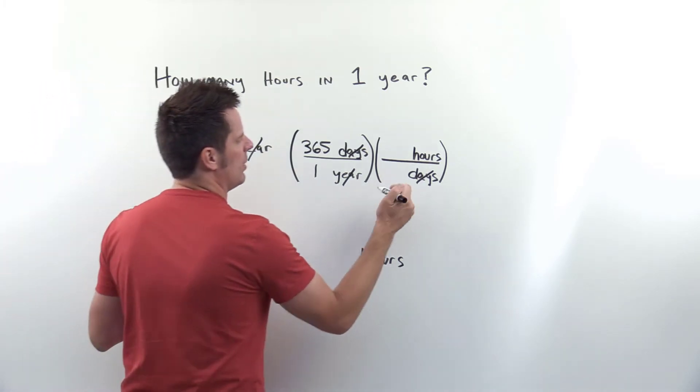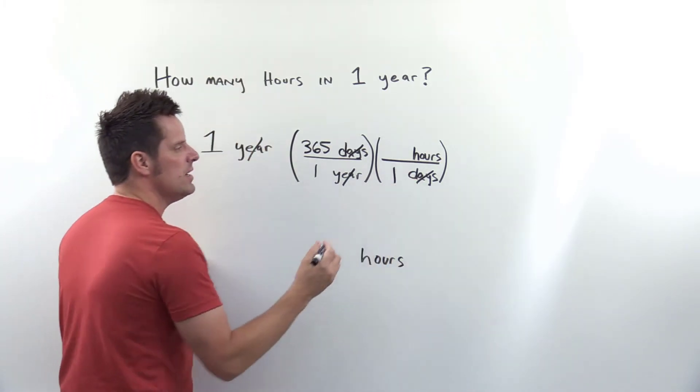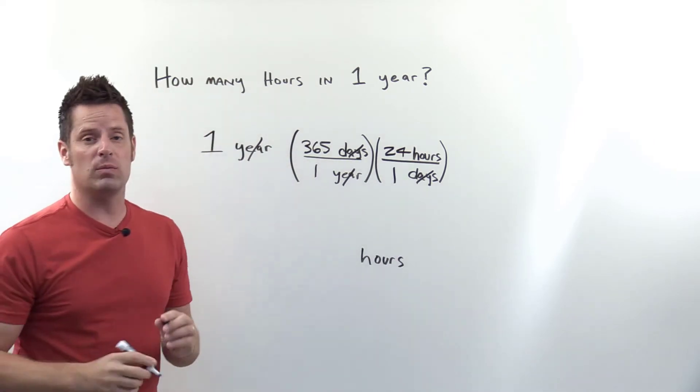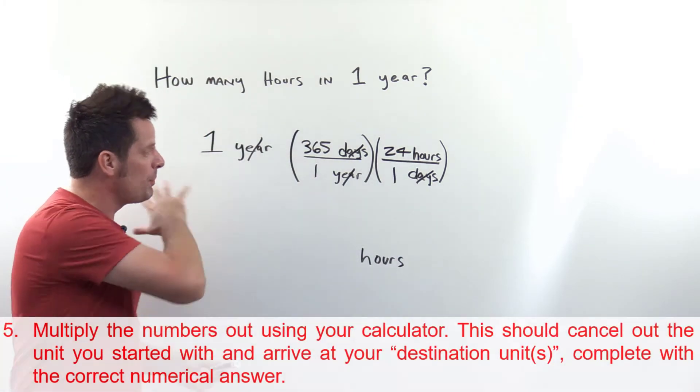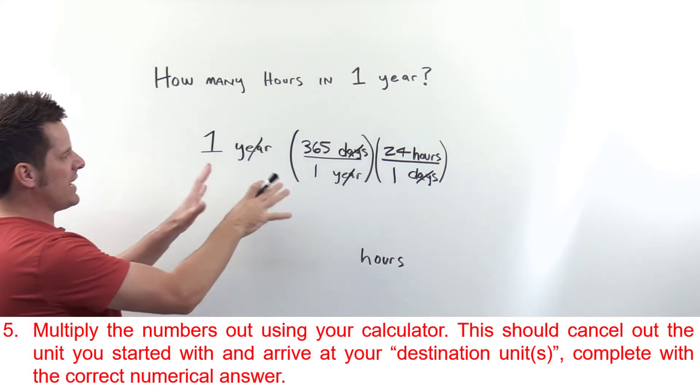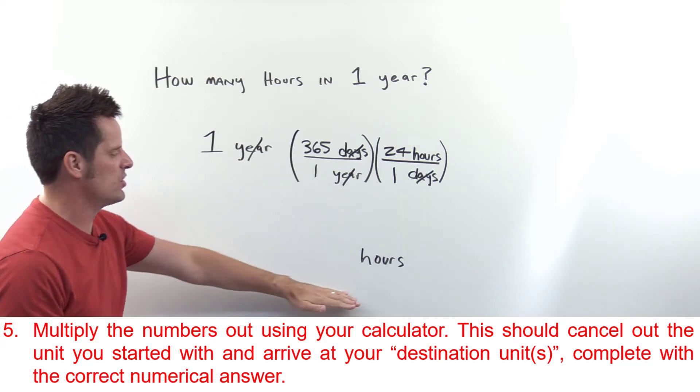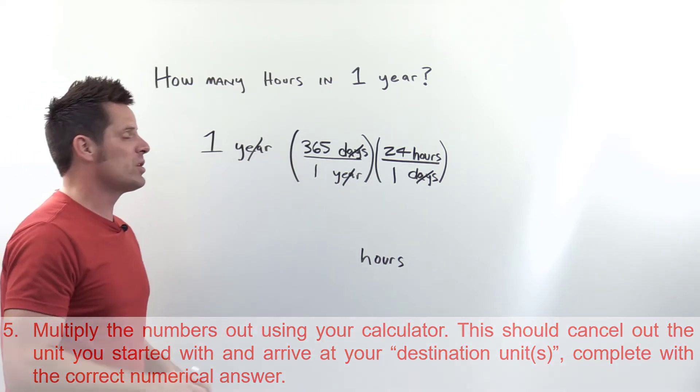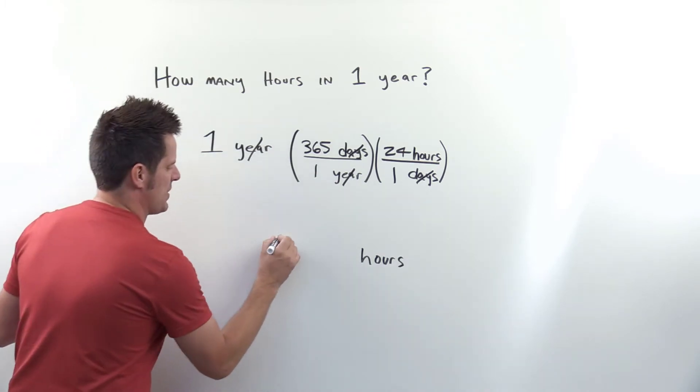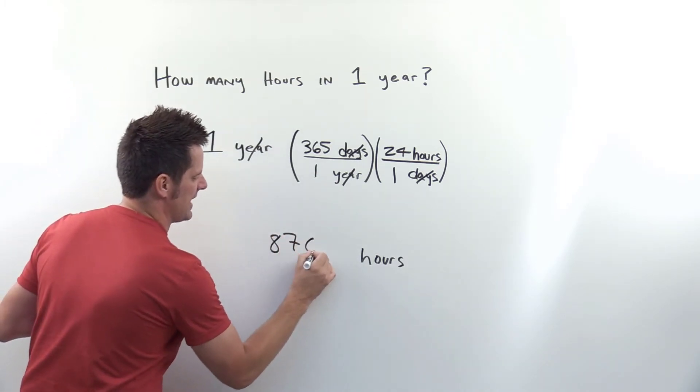One day has how many hours? 24. We're done with step four. Step five is to multiply everything out, cancelling all the units. I'll do this on the calculator to arrive at 8760 hours.